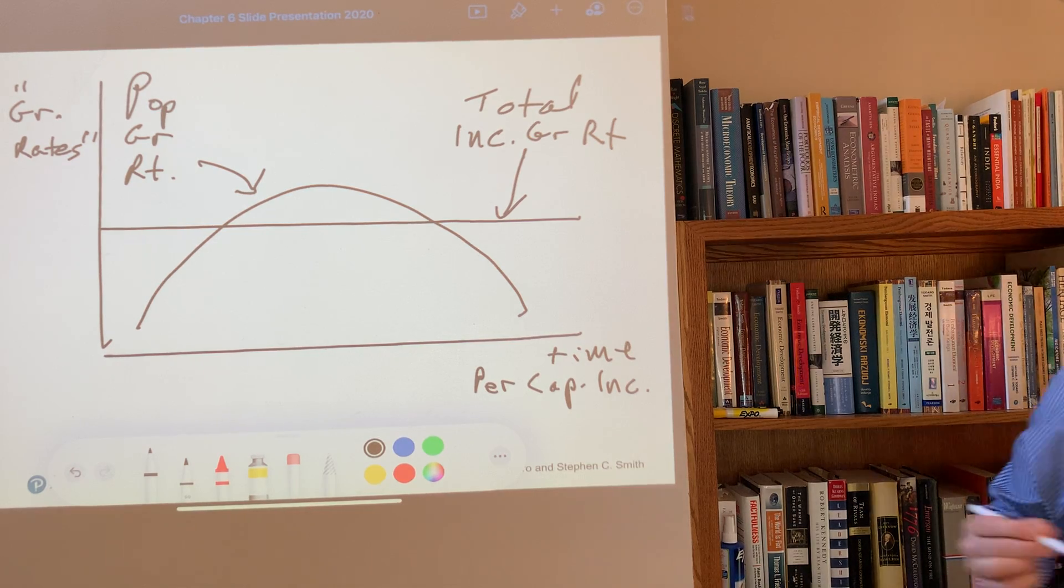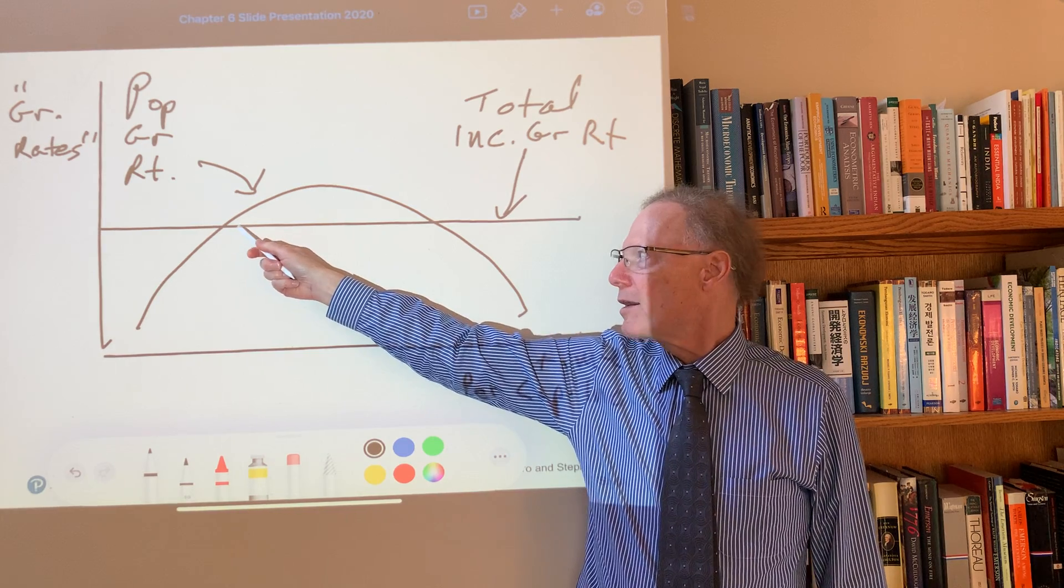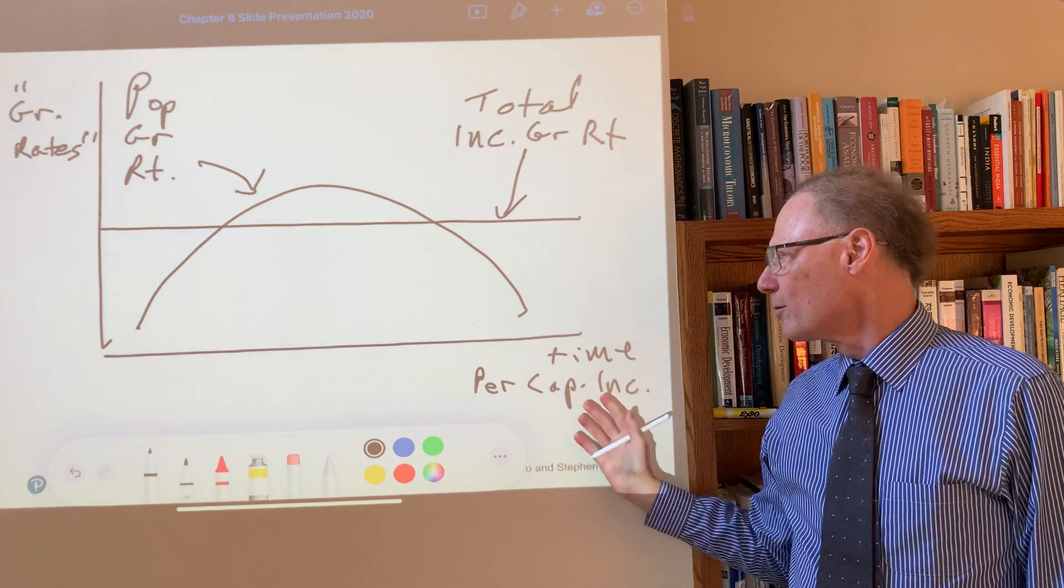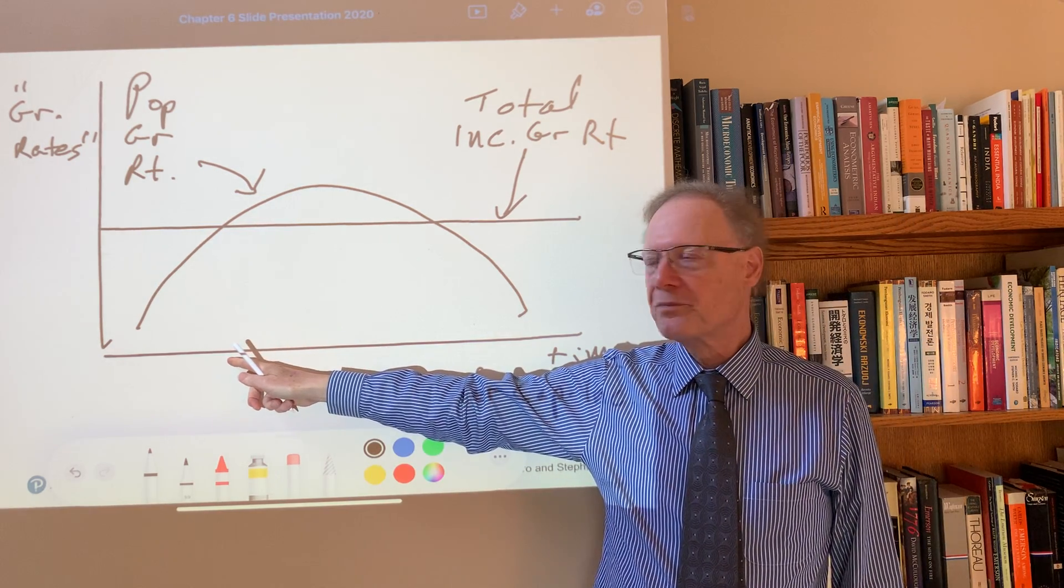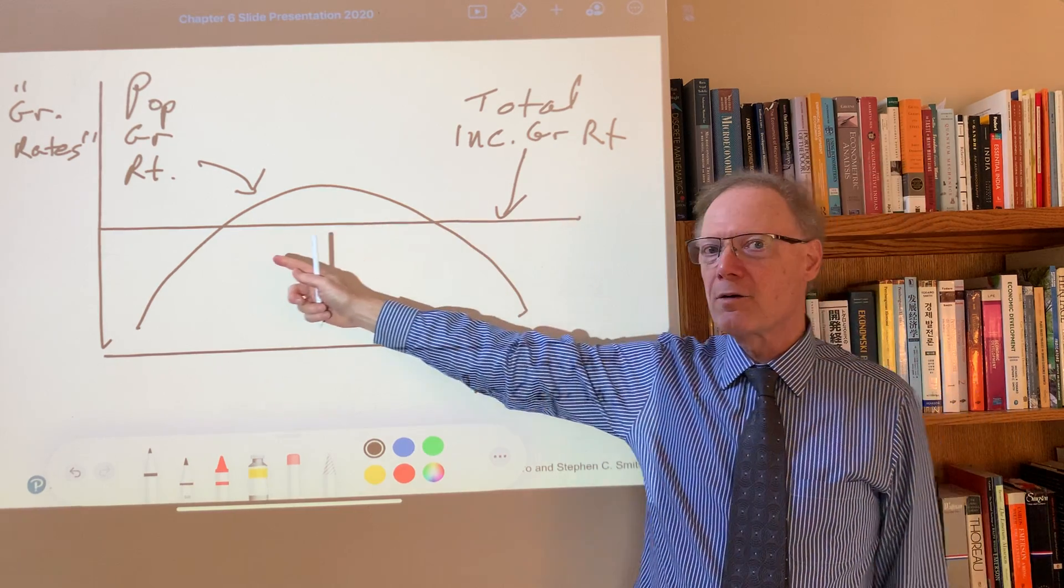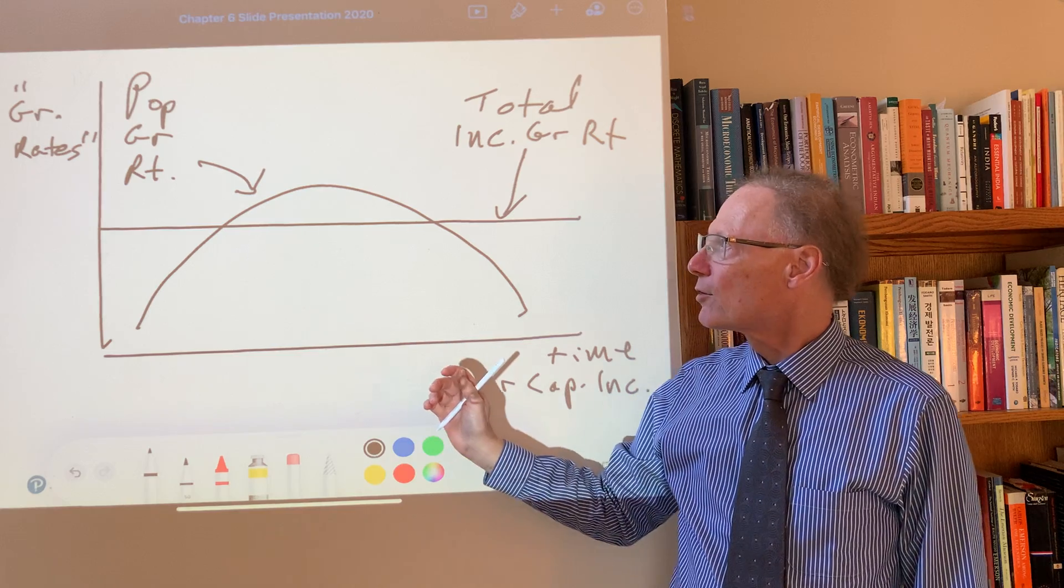Now the idea here is that we could be stuck at an equilibrium at this point, at a rather low per capita income. And we can see that because of the relationship that we know between total income growth and population growth rate.